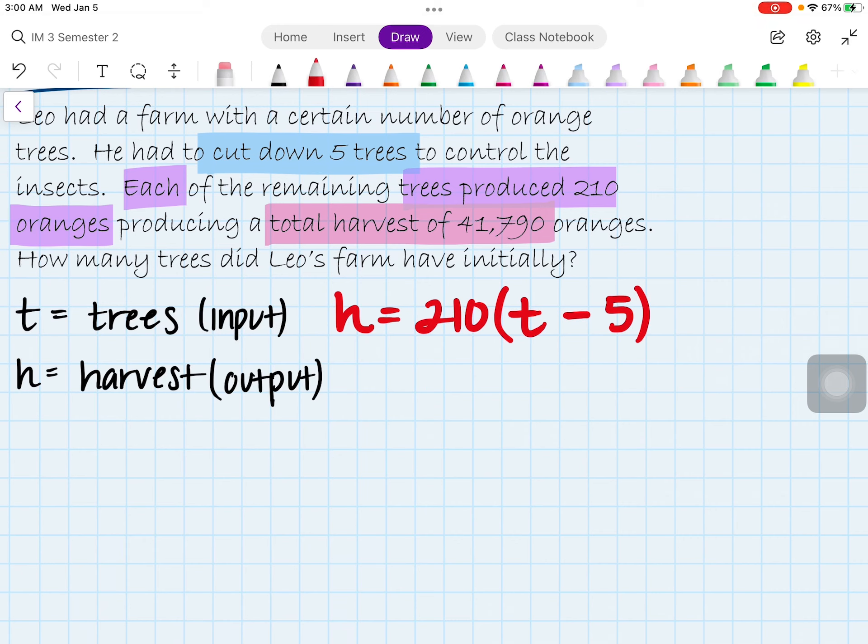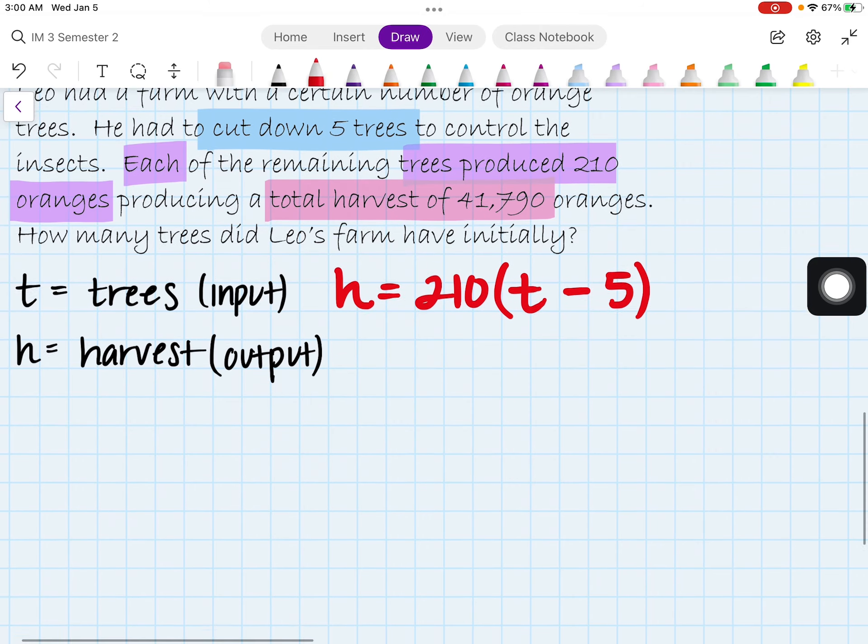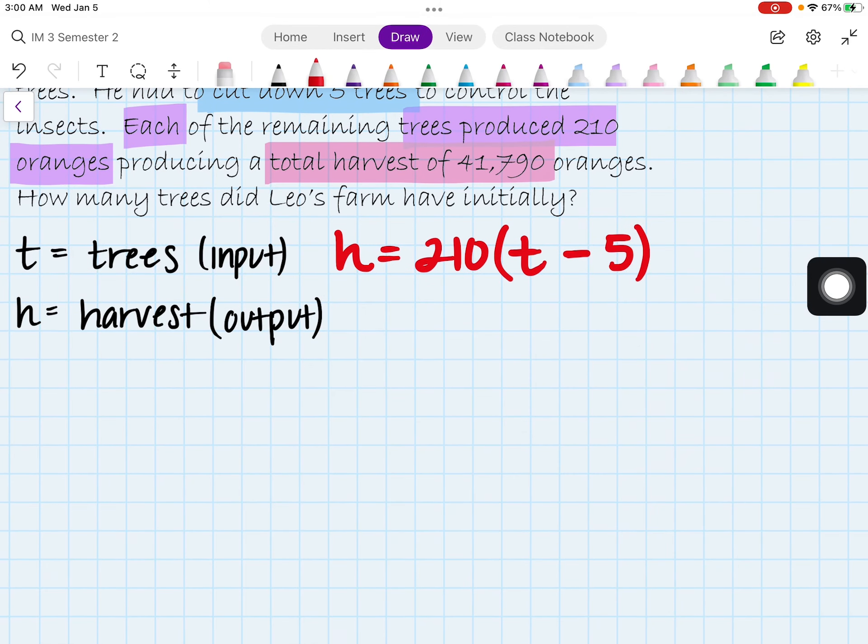Now, in this case, we do know what the harvest is. Harvest in this case is 41,790. So let's go ahead and substitute that. I have 41,790 equal to 210 times t minus 5.